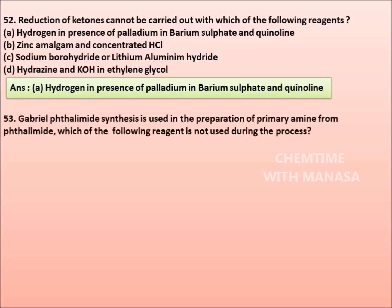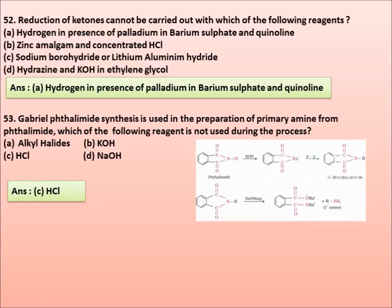Fifty-three. Gabriel phthalimide synthesis is used in the preparation of primary amine from phthalimide. Which of the following reagent is not used during the process? Alkyl halides, KOH, HCl, NaOH. Correct answer is option C: HCl. In Gabriel phthalimide synthesis, first the phthalimide reacts with ethanolic potassium hydroxide, then we get potassium salt of phthalimide. This potassium salt of phthalimide is heated with alkyl halides followed by alkaline hydrolysis, then we get a primary amine. Here in the synthesis we are not using HCl.